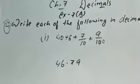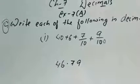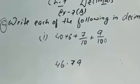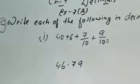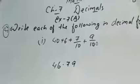Then we use the decimal part: 7 by 10 is the 10ths position, 9 by 100 is the 100ths position. So the value will become 46.79.